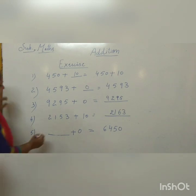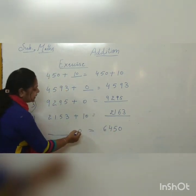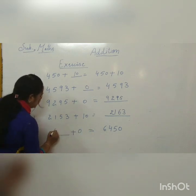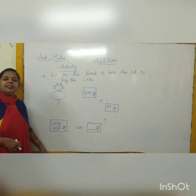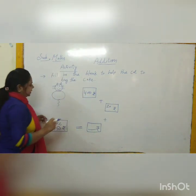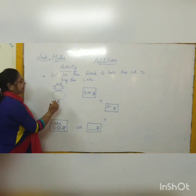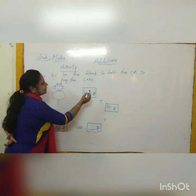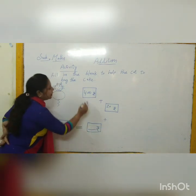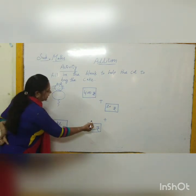Question 5: dash plus 0 equals 6,450. When 0 is added to any number the number remains the same, so we write 6,450. Activity: Fill in the blank to help the cat buy the cake. The cost of the cake is 450 rupees. Her mother gave her 400 rupees and her father gave her 20 rupees. So 400 plus 20 equals 420. She needed 30 more rupees to buy the cake.